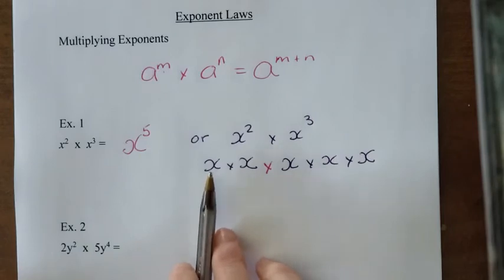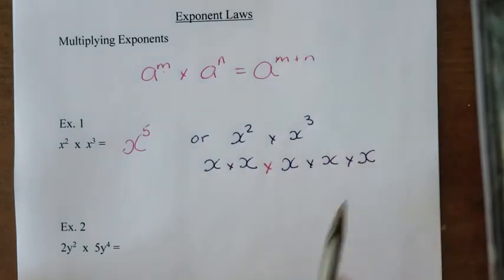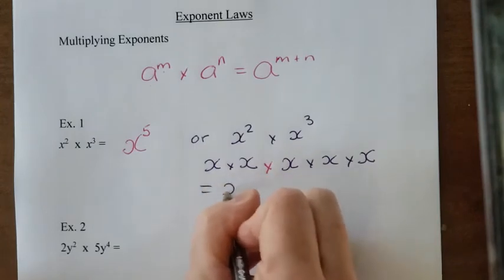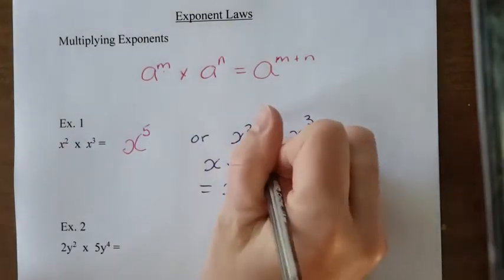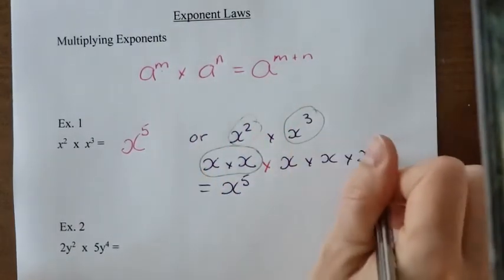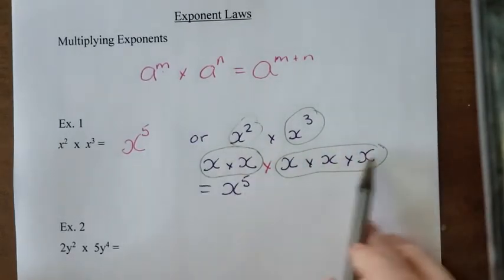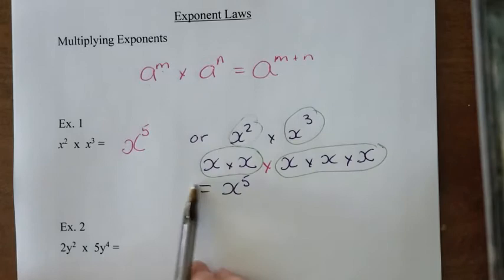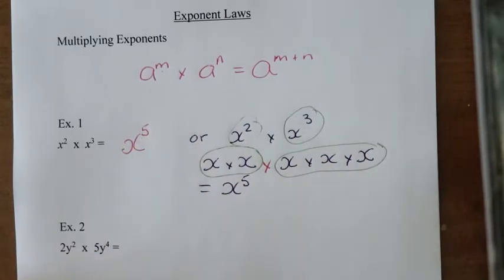Well, let's count this up. We have x times itself 1, 2, 3, 4, 5, which is the same as saying x to the power of 5. So x squared is the same as x times x. x to the power of 3 is the same thing as x times x times x. And when we count it up, it's 5. We don't have to go through this work each time. We could just simply add the exponents to get the exact same answer.